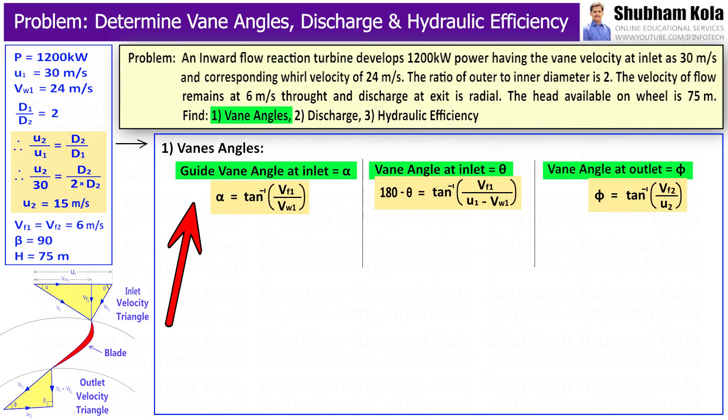So, first we need to calculate vane angles. The guide vane angle at inlet can be calculated by applying trigonometric ratio, that is tan α equal to vf₁ upon vw₁. I will substitute the values of vf₁ and vw₁, and by taking tan inverse, we will get angle α equal to 12.68 degrees.